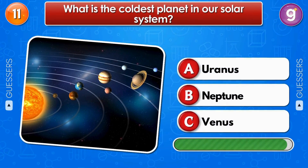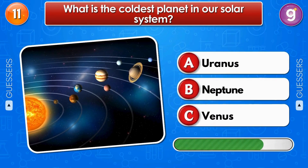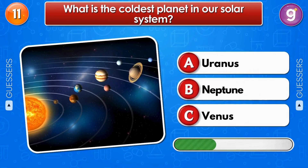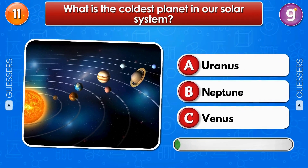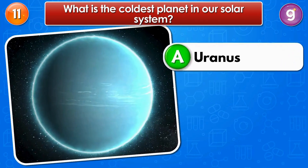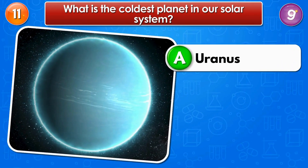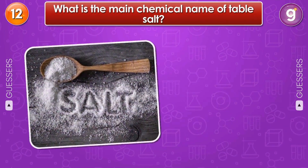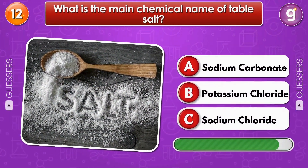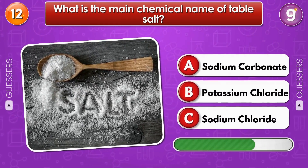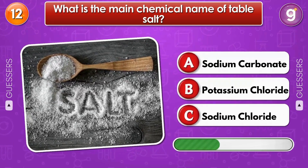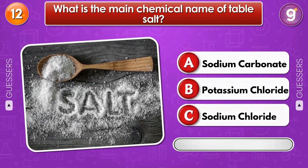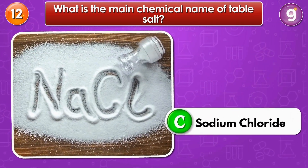Melting. What is the coldest planet in our solar system? Uranus. What is the main chemical name of table salt? Sodium chloride.